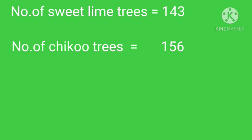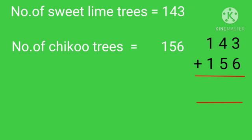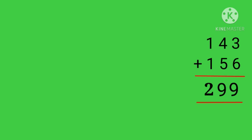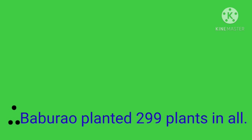Number of sweet lime trees is equal to 143. Number of chikku trees is equal to 156. So you have to add 143 plus 156. 3 plus 6 is equal to 9, 4 plus 5 is equal to 9, 1 plus 1 is equal to 2. So your answer is 299. Therefore Babu Rao planted 299 plants in all.